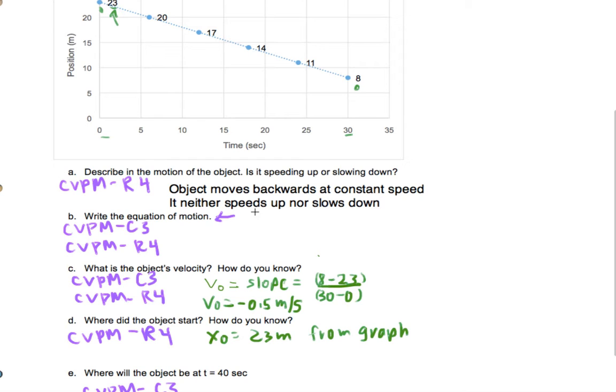So when I want to write down the equation of motion, the old way of writing this would be y equals mx plus b, and that would be y equals negative 0.5x plus 23. But we don't write it that way anymore. We're in physics class, so we need x as the position equals negative 0.5t plus 23 meters as our starting point.